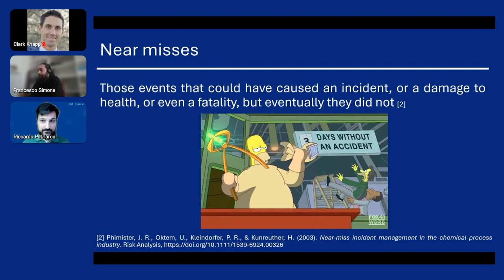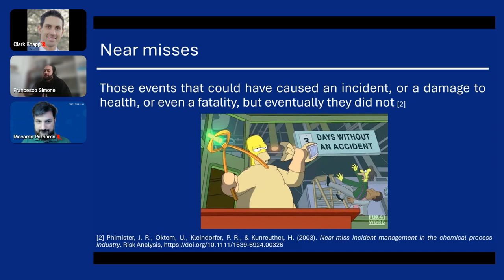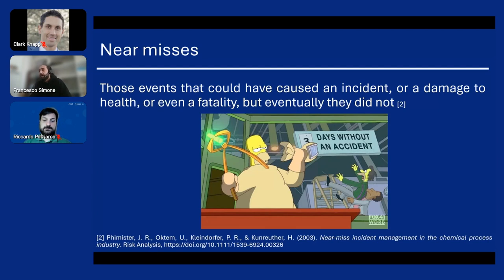And that's where I would ask Francesco to take over. If our aim is to lower the number of incidents and accidents but we still learn from their occurrences, there is a possibility that we can learn something from near misses. This work started on the assumption — also recognized in literature — that near misses and reporting near misses could be used as a proactive tool for safety management, since they can provide a lot of information comparable to that obtained by major accidents. By definition, we can define near misses as all those events that could have caused an incident or damage to health or even a fatality, but they did not.